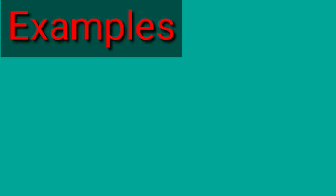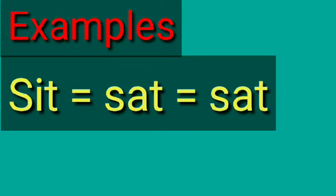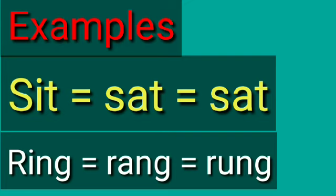For example, the verb 'sit' does not allow 'ed' to be attached after it to change its form. Instead, 'sit' changes its internal vowel letter to make its second and third form: sit, sat, sat. All those verbs which do not allow 'ed' to be attached to make their second and third form are known as strong verbs.